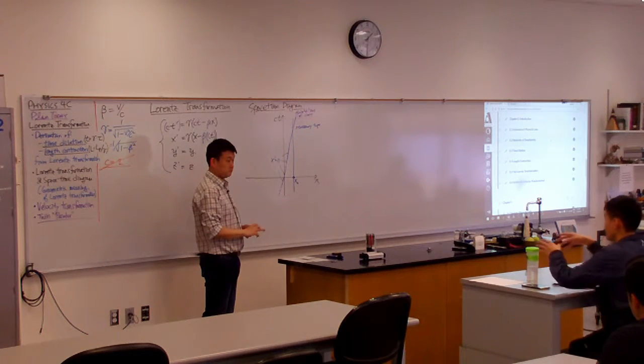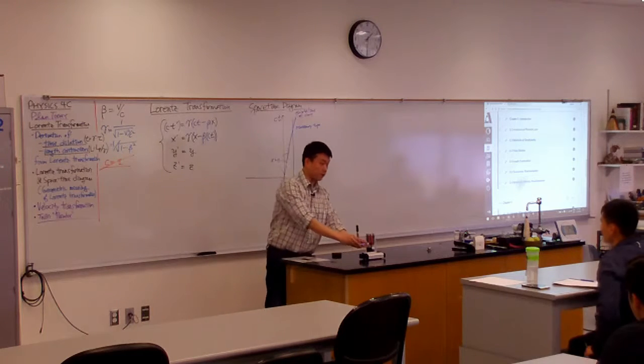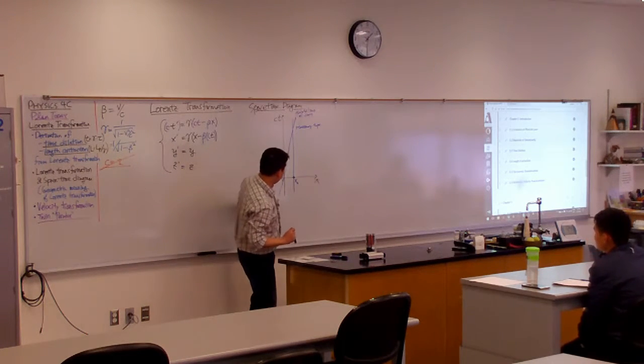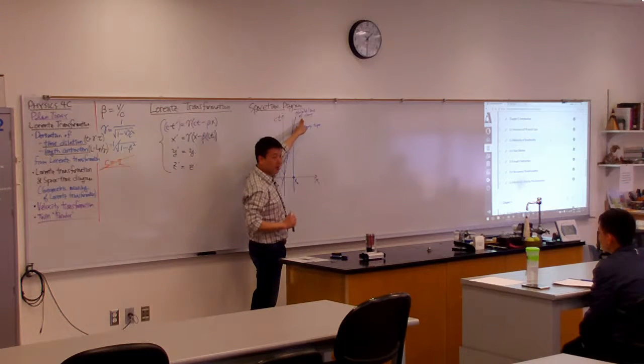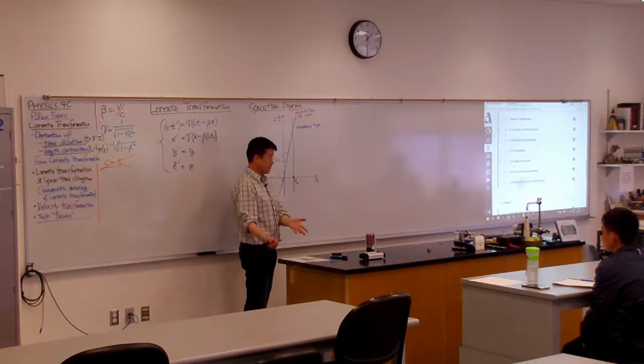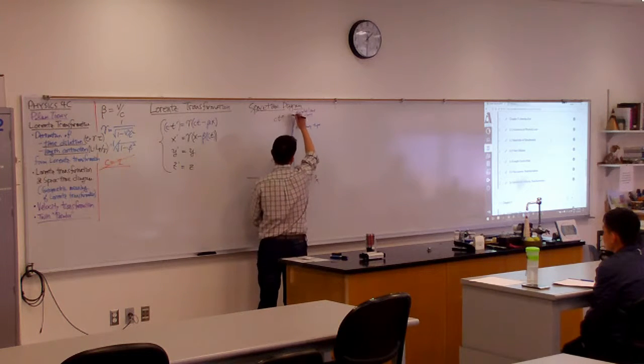Like the coordinate system, it's moving with the cart. Yeah, it's moving with the cart, right? So this, the line that I drew, that's the world line of the cart, that is actually the transformed axis. I could call this ct prime.